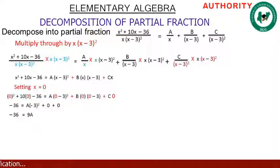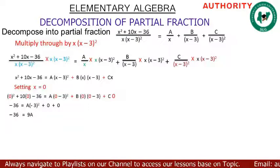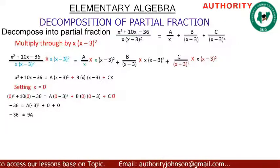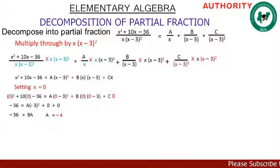On the B side, B times 0 times (0 minus 3) equals 0. On the C side, C times 0 equals 0. On the A side, (0 minus 3) squared equals 9, so we have 9A. Therefore: minus 36 equals 9A, and dividing both sides by 9, A equals minus 4.